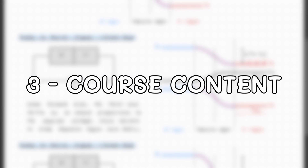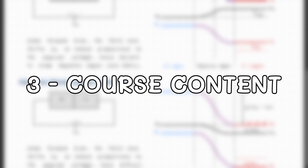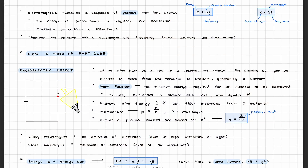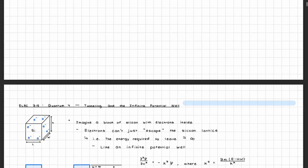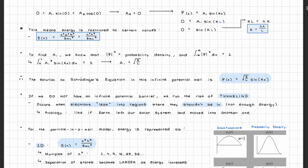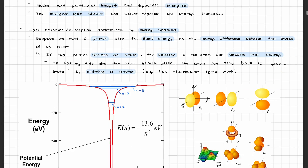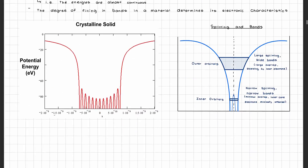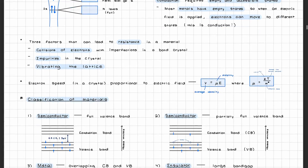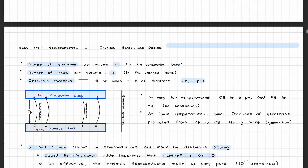Now let's get into what you're actually going to learn in ELEC 315. We started off with an introduction to quantum mechanics to understand what's going on at the absolute smallest scale. In this unit, we covered the photoelectric effect, how electrons act as waves and particles at the same time, Schrödinger's equation and how to derive the solution for it in a particle in a box, atomic orbitals as discrete states, bonding as it pertained to quantum mechanics, electronic spin and conduction, and how materials are classified based on their conduction bands and valence bands.